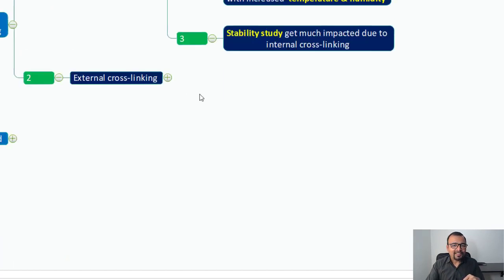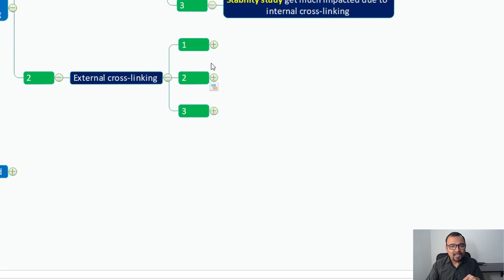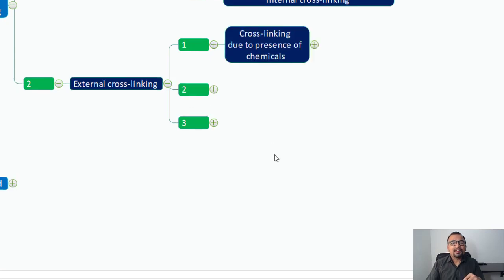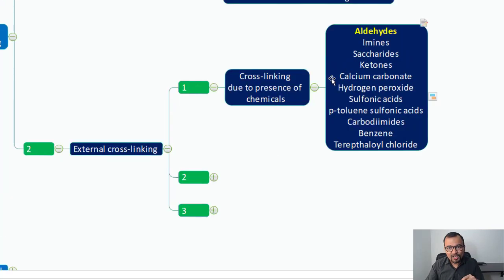The second type of cross-linking is called external cross-linking, and external cross-linking is possible due to presence of chemicals such as, and here are those examples of the chemicals which can lead to the formation of external cross-linking: aldehydes, imines, saccharides, ketones, calcium carbonate, hydrogen peroxide, sulfonic acids, paratolene, carbodeimides, benzene, and terephthalyl chloride. These are the few functional groups which can result in the formation of cross-linking.